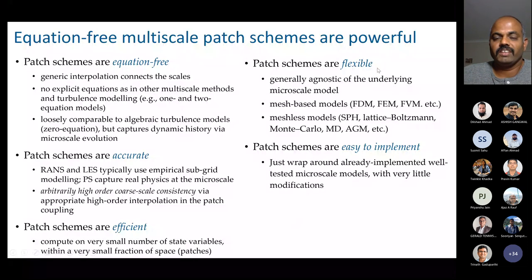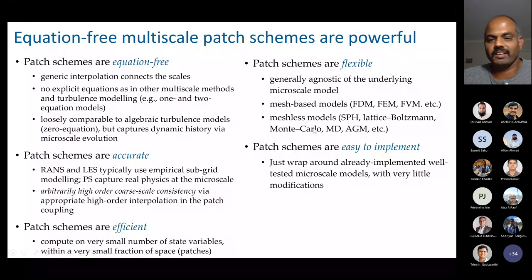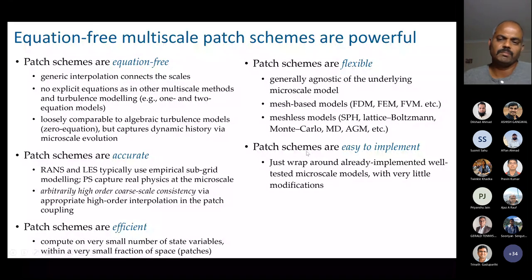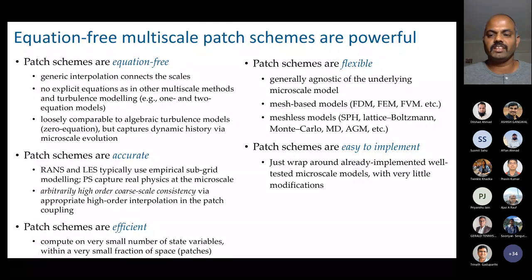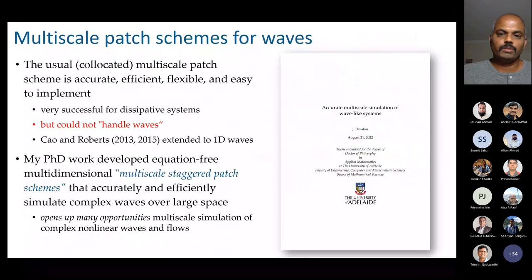We can achieve arbitrarily higher order macro scale consistency by decreasing the inter-patch spacing capital Delta, and achieve arbitrary consistency using higher order interpolations for patch coupling. Patch schemes are highly efficient — computing on very few degrees of freedom. They are very flexible: you can use pretty much any model within the patches — finite difference, finite element, finite volume, or meshless models like smoothed particle hydrodynamics, lattice Boltzmann, Monte Carlo, or molecular dynamics. Patch schemes are easy to implement — you wrap a well-tested model inside patches with an interpolation for edge nodes.